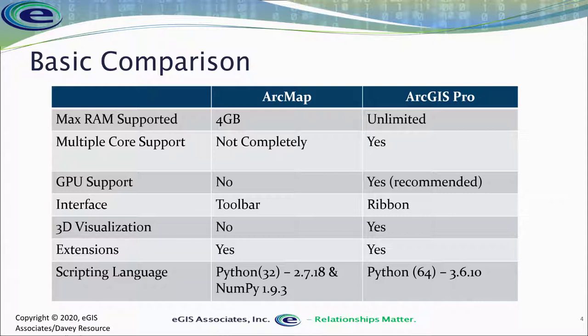ArcPro supports 3D visualization of data out of the box. In ArcMap, you can't view data in 3D — you have to have the 3D Analyst extension and open ArcScene or ArcGlobe. Both applications still have extensions to increase functionality: 3D Analyst, Spatial Analyst, Geostatistical Analyst, and so on are available for both. The other key difference is the Python version. ArcMap uses a 32-bit version of Python 2.7.18, whereas ArcPro uses Python 3.6.10 in the most current versions — 10.8.1 and 2.6.2 respectively. If you have Python scripts developed for ArcMap, you'll need to rework those for ArcPro.